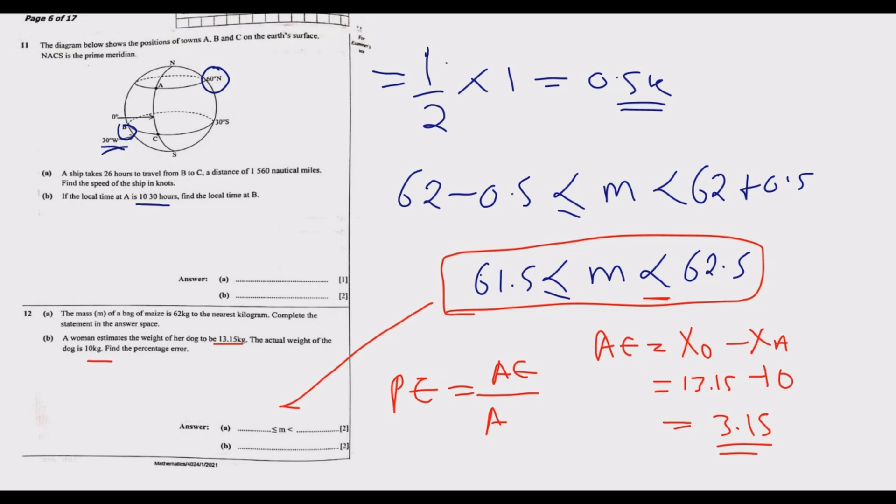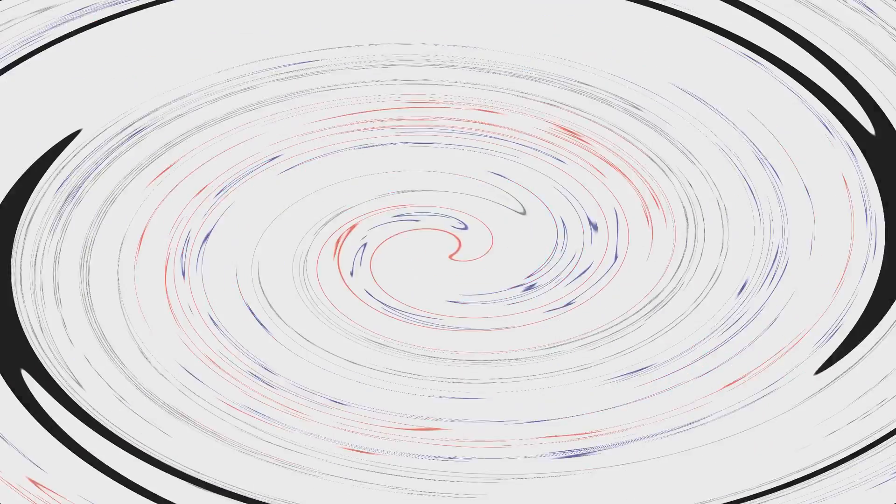That's the absolute error. To find the percentage error it will be 3.15 over 10 which is actual, multiplied by 100, which will give us 31.5 percent. 31.5 percent is our answer. This is how you answer this question.